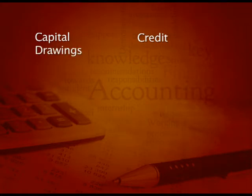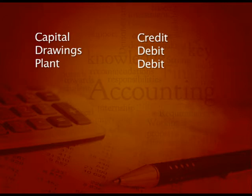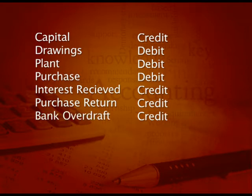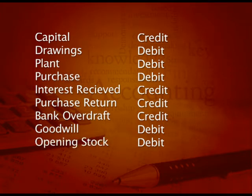Let us test our understanding of which accounts are debit and which are credit. Capital — credit balance. Drawings — debit balance. Plant — debit. Purchase — debit. Interest received — credit, because it is an income. Purchase return — credit. Bank overdraft — credit, it is a liability. Goodwill — debit, it is an asset. Opening stock — debit. Salary — debit, it is an expense.